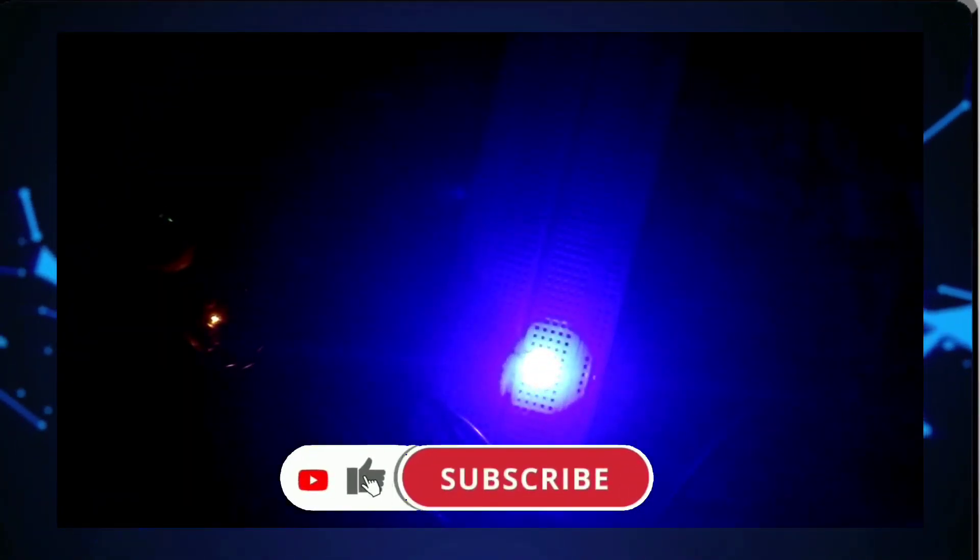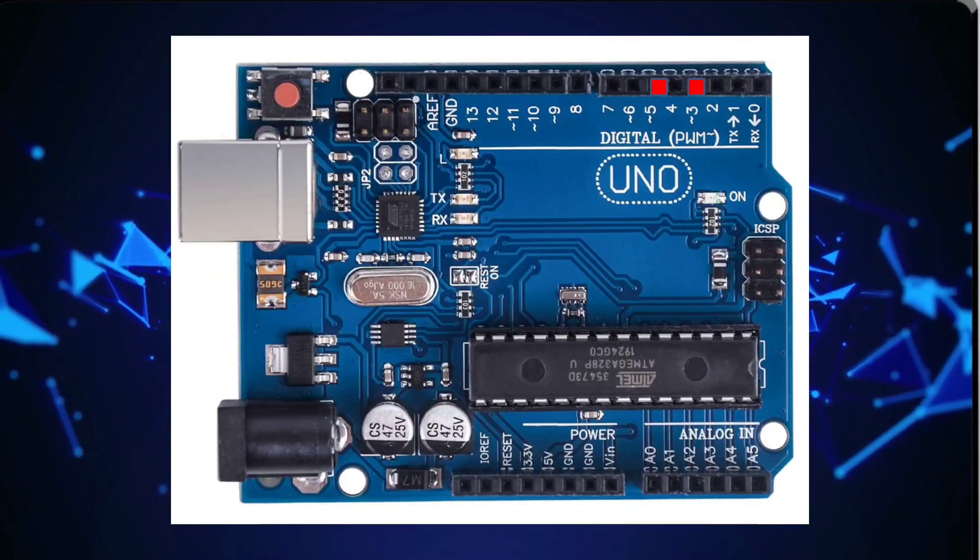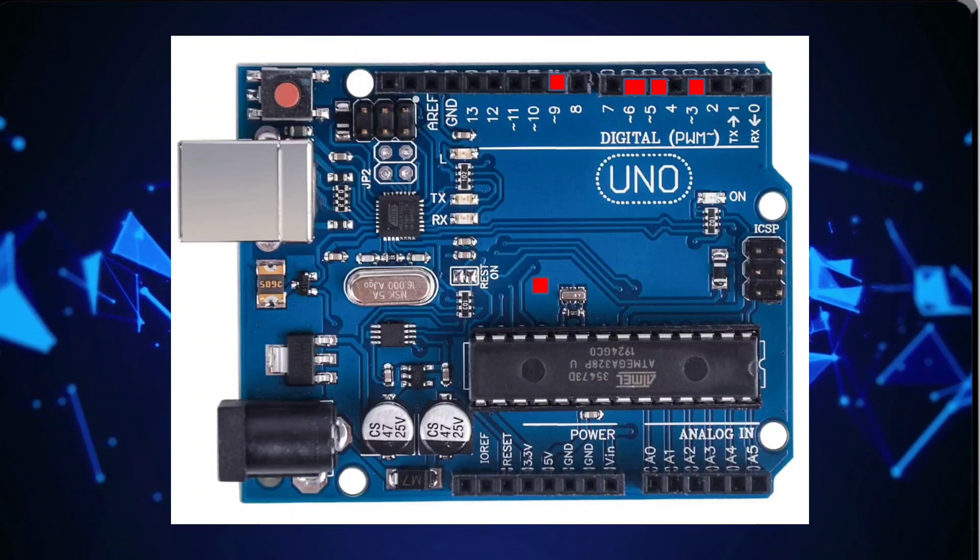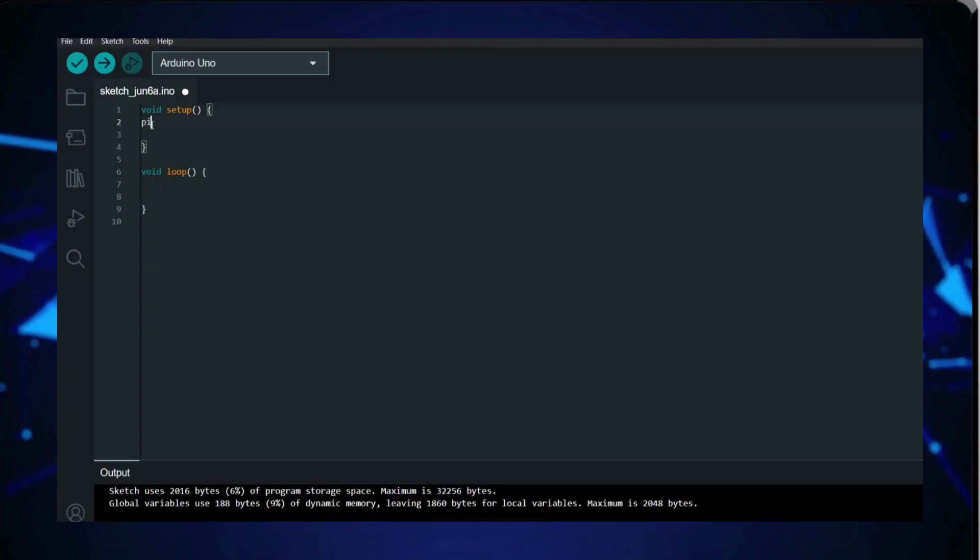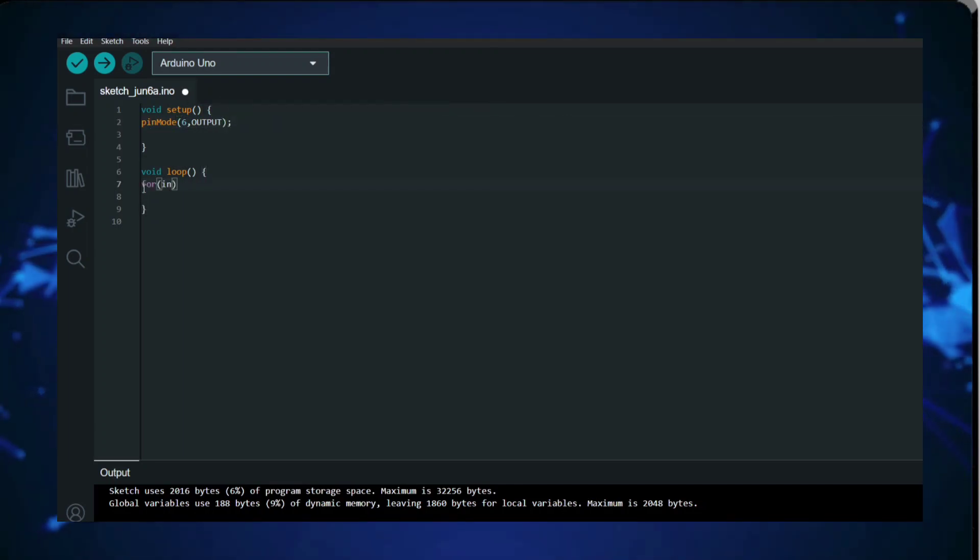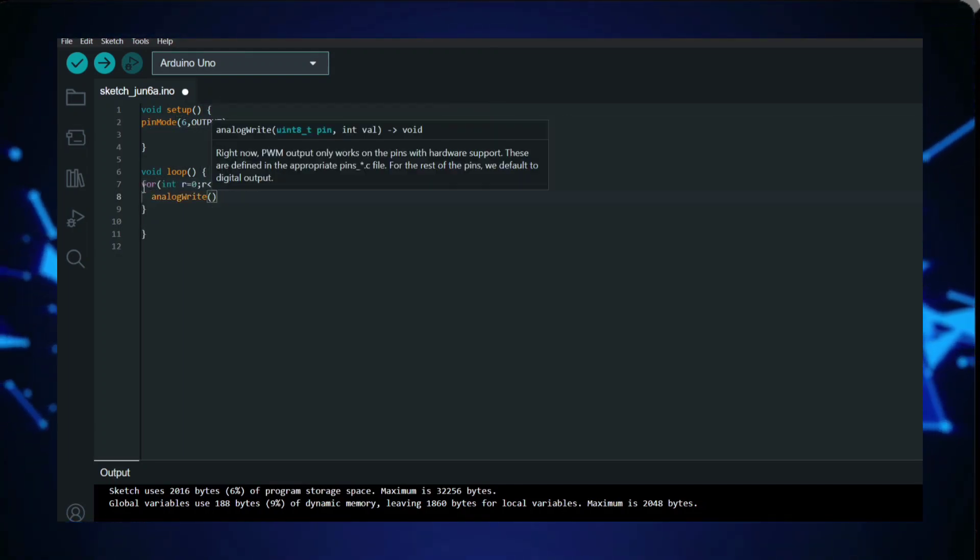Among the 14 digital I/O pins, 6 pins labeled 3, 5, 6, 9, 10, and 11 support PWM output. PWM allows for precise control of analog-like signals, enabling smooth control of devices such as LEDs, servos, and motor speed.